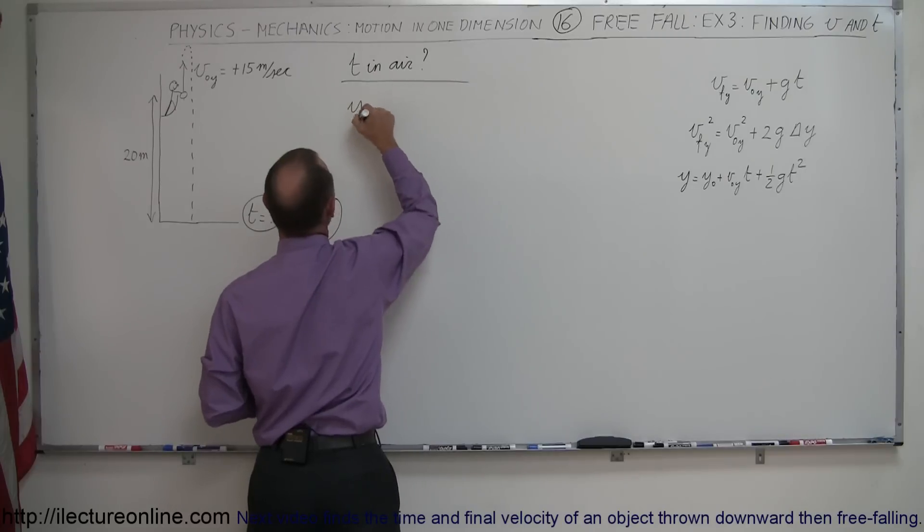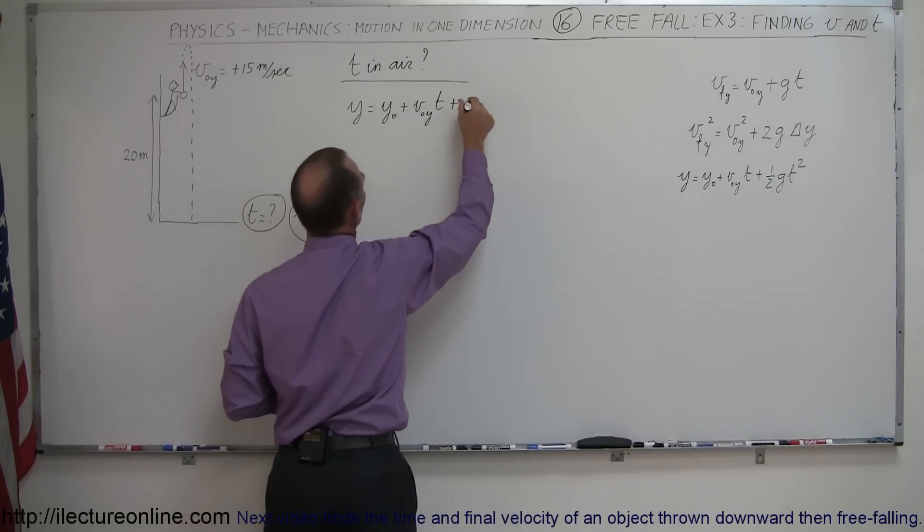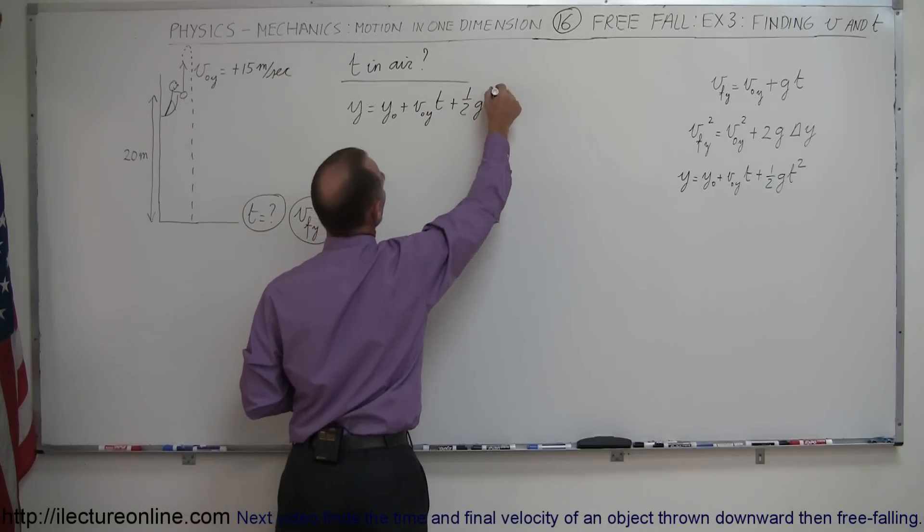So we'll use this equation y equals y sub naught plus v sub naught in the y direction times time plus one-half g t squared.